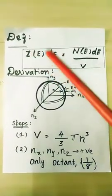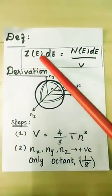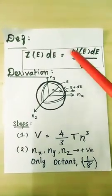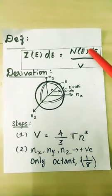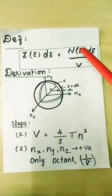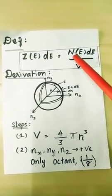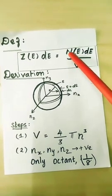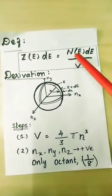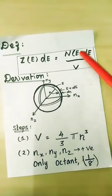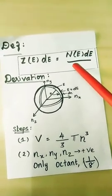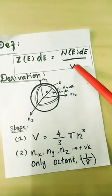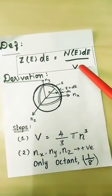Definition for density of energy states: Z(E)dE is equal to N(E)dE divided by V. So, density of energy states equals the number of available energy states in the energy interval E and E plus dE, that is N(E)dE. And V is the volume of the material — suppose if we have taken a metal piece, that volume is represented as capital V.